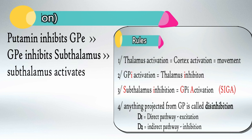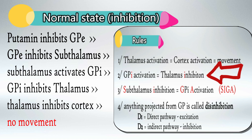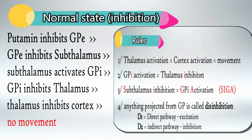In the case of no movement, memorize that the putamen will inhibit the globus pallidus externus, which will inhibit the subthalamus. From there you use the rules: an inhibited subthalamus means the globus pallidus internus will be activated, active globus pallidus internus will inhibit the thalamus, which will inhibit the cortex, and there will be no movement.